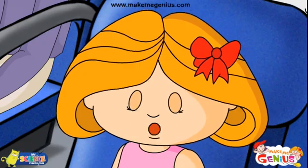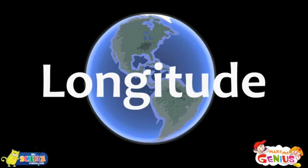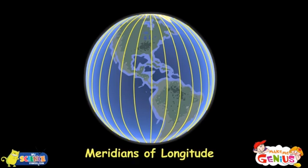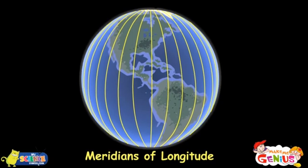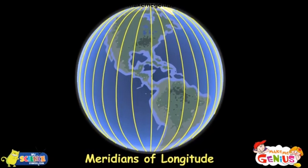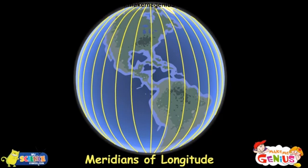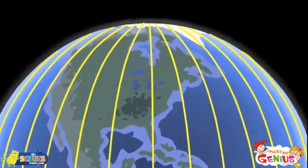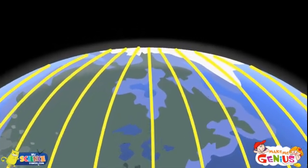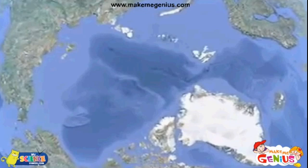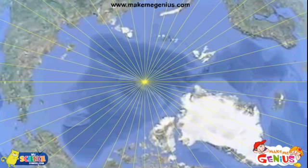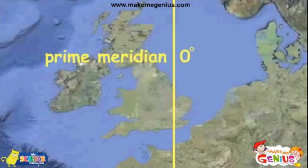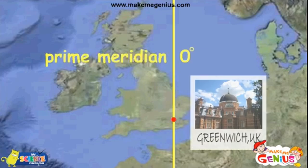Now, longitudes. Lines that run from north to south on earth are called meridians of longitudes. These lines are measured the same as parallels of latitude — in degrees, minutes, and seconds. Unlike parallels of latitude, the meridians of longitude are not equidistant; they intersect at the north and south poles. Do you know that the zero degree meridian passes through the Royal Observatory in Greenwich, England?